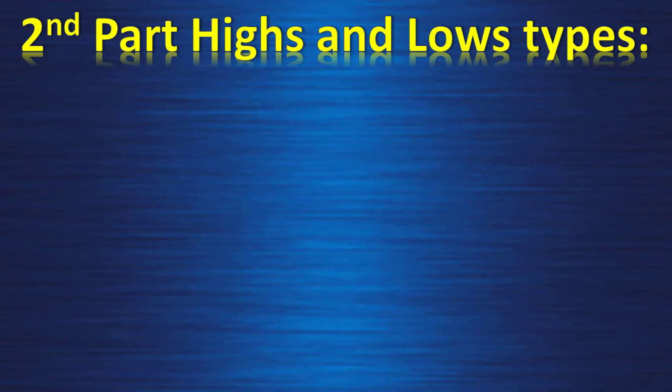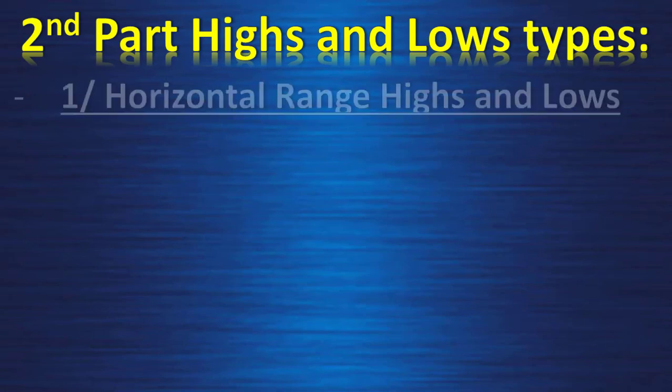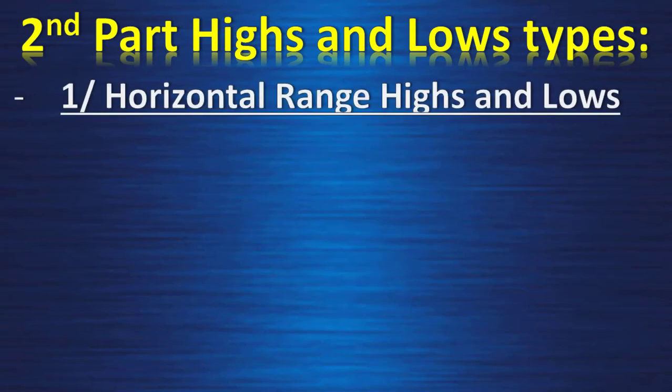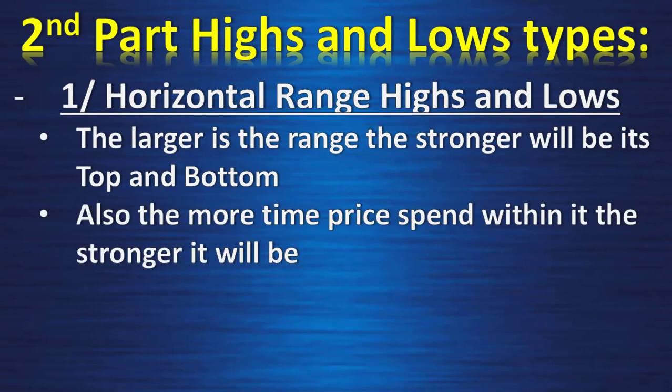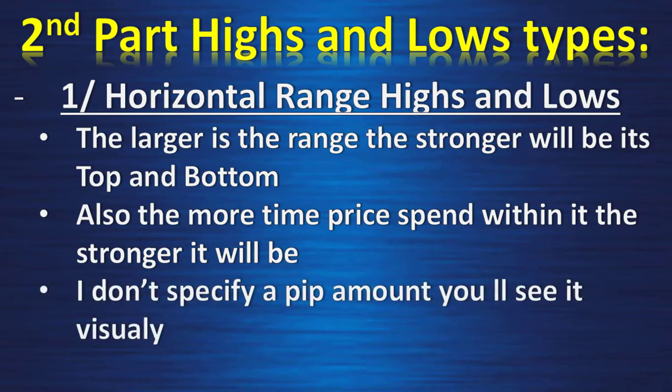Second part: Highs and Lows Types. First, Horizontal Range Highs and Lows. The larger the range, the stronger its top and bottom will be. Also, the more time price spends within it, the stronger it will be. I don't specify a pip amount — you'll see it visually.